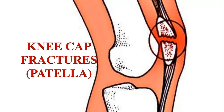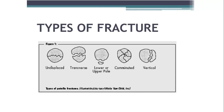Fractures can also occur in the patellar bone — these are called kneecap fractures or patellar fractures. Fractures can occur in four types: there may be an undisplaced simple fracture, there may be a transverse fracture where the two ends are away from each other, the lower or upper pole can be damaged, a comminuted fracture where it is divided into different parts, and a vertical fracture. So these are the types of fractures that can occur in the patella.